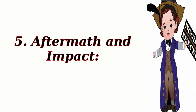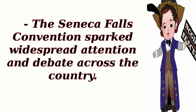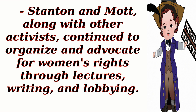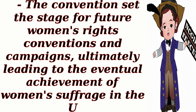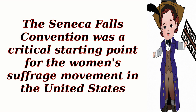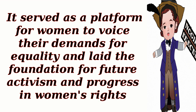5. Aftermath and Impact. The Seneca Falls Convention sparked widespread attention and debate across the country. It provided a catalyst for the women's suffrage movement and the formation of women's rights organizations. Stanton and Mott, along with other activists, continued to organize and advocate for women's rights through lectures, writing, and lobbying. The convention set the stage for future women's rights conventions and campaigns, ultimately leading to the achievement of women's suffrage with the ratification of the 19th Amendment in 1920. The Seneca Falls Convention was a critical starting point for the women's suffrage movement, serving as a platform for women to voice their demands for equality and laying the foundation for future activism and progress in women's rights.